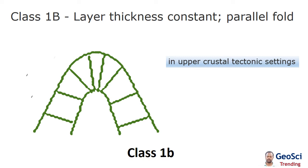Class 1b concentric folds are a special case of Class 1b parallel folds where outer and inner bounding surfaces define arcs with a common center of curvature. These types of folds are common in upper crustal tectonic settings where most deformation occurs by processes that only permit limited ductile flow of rock. Most deformation is accommodated by slip on bedding or layer boundaries, which is flexural slip folding.